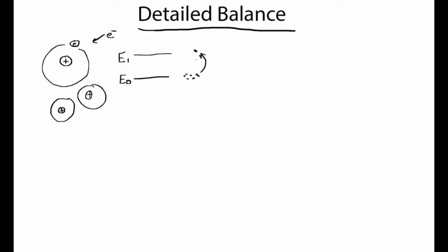Now if there were no reverse process, then eventually if we let this play out long enough, all of these atoms would end up in the excited state because there's no reverse process — there's no way for them to get back down. So let's suppose there's also a collisional de-excitation, where an electron hitting an atom in the excited state can pull off a little bit of energy into the kinetic energy of the electron, giving us a path back down into the ground state.